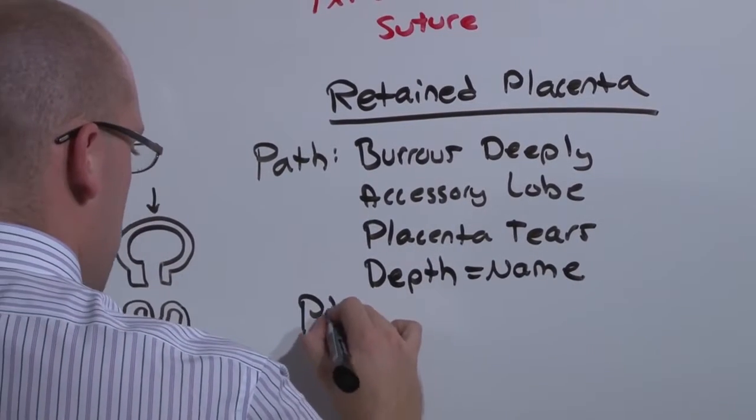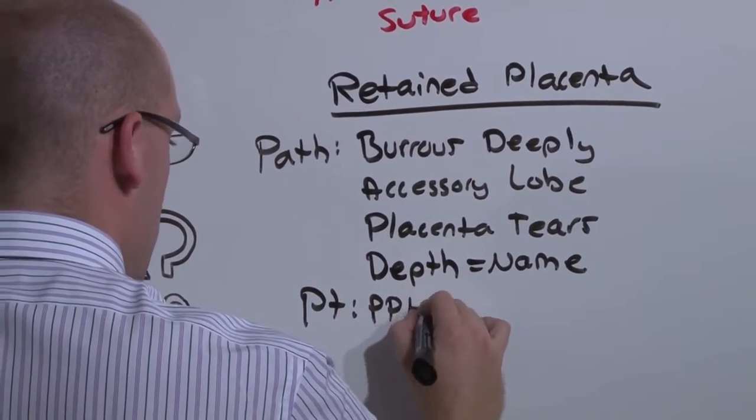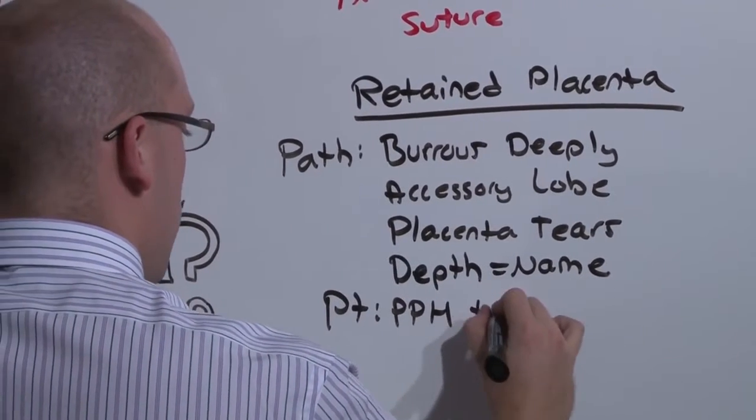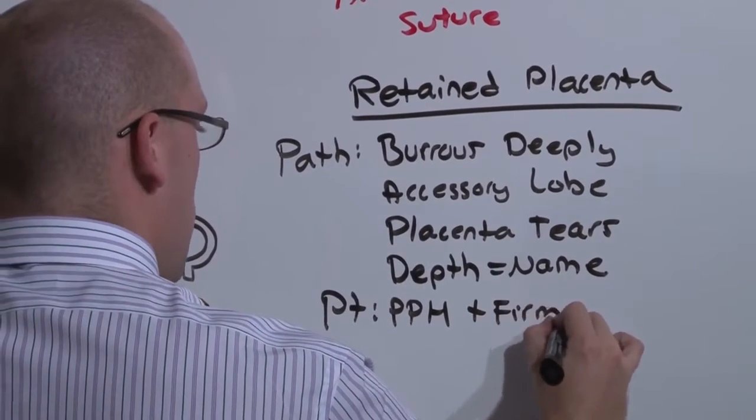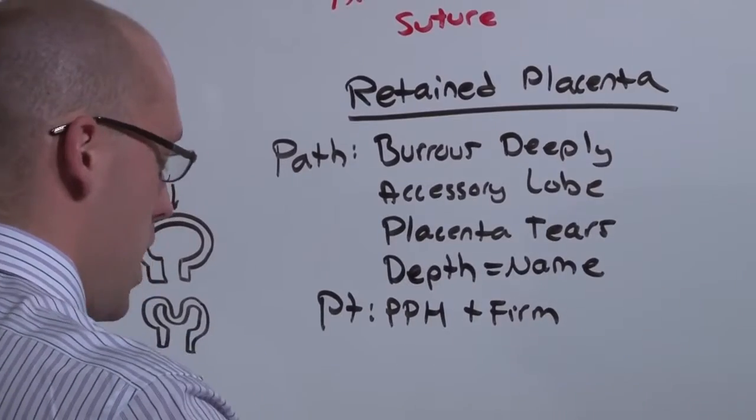The patient is going to present as a postpartum hemorrhage that can be quite brisk and a firm uterus. It's firm because there's something in the way of it contracting down.